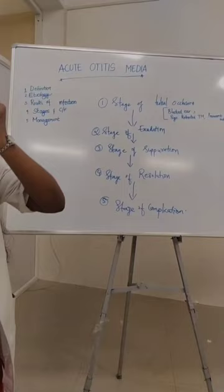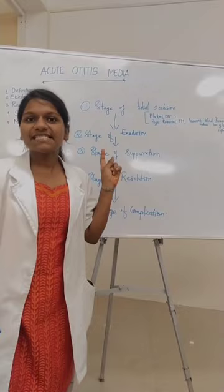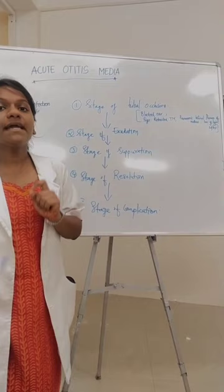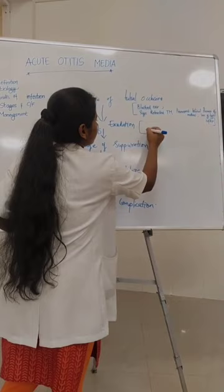The next stage is the stage of exudation. In this stage, it is characterized by marked earache and there will be slight hearing loss. The main sign in the stage of exudation is a cartwheel appearance of the tympanic membrane, which is diagnostic for this stage.